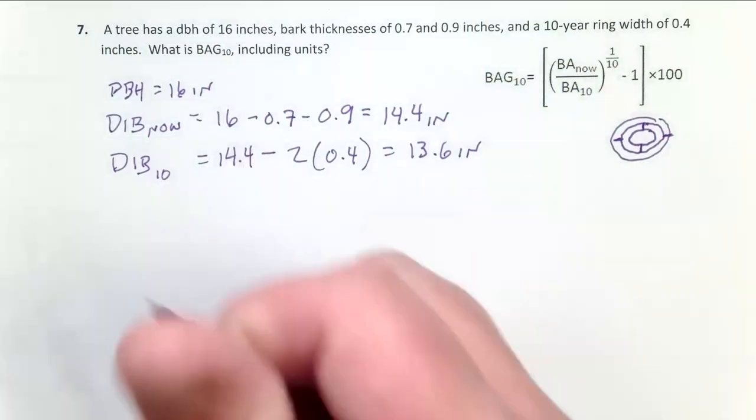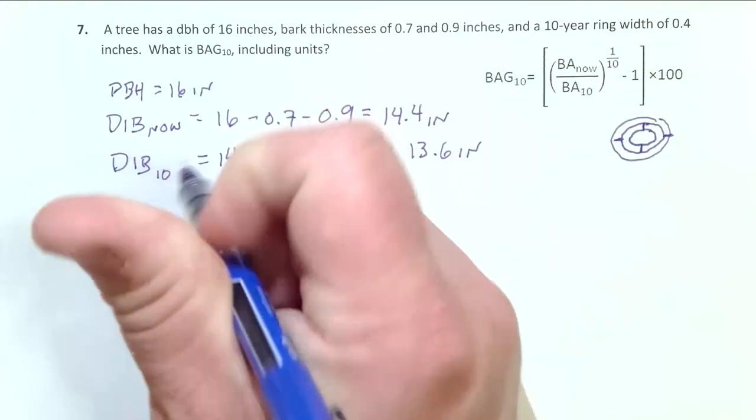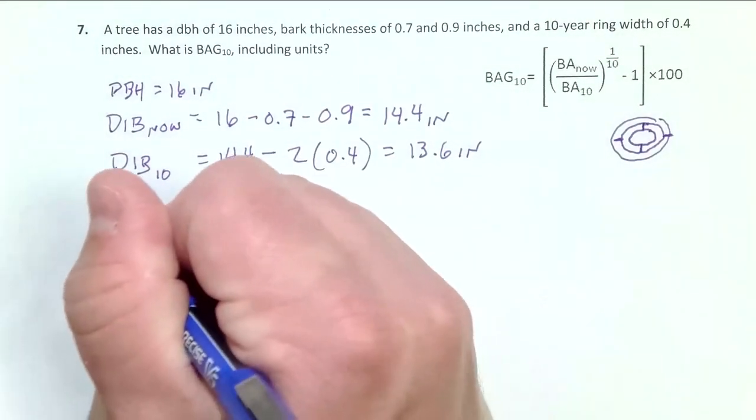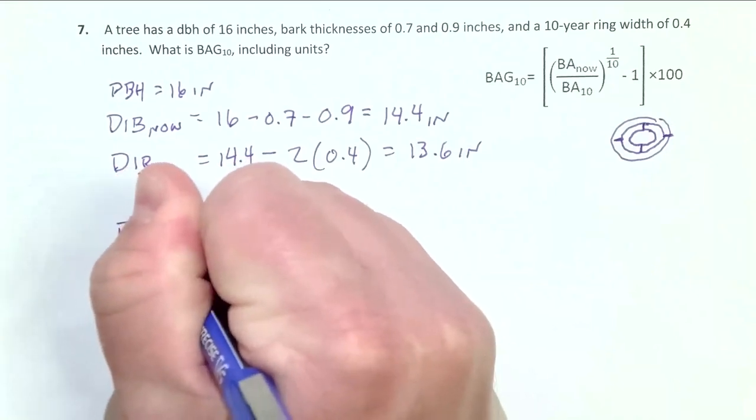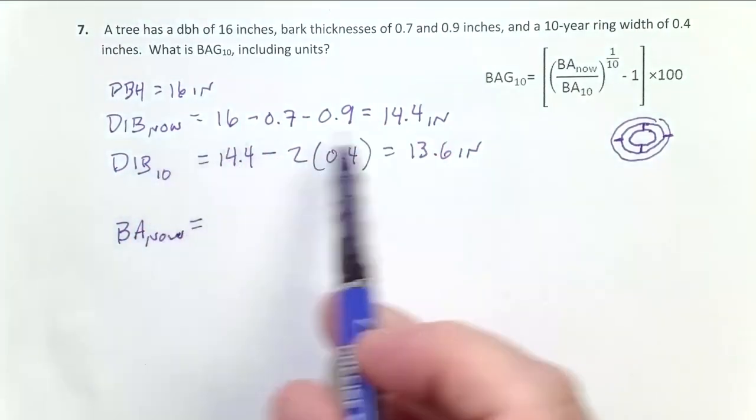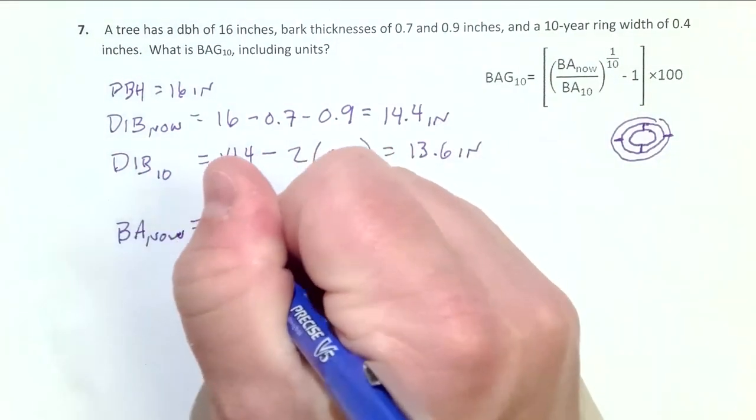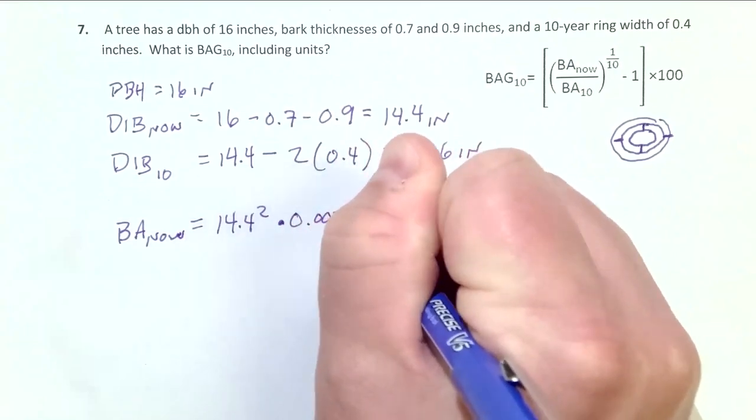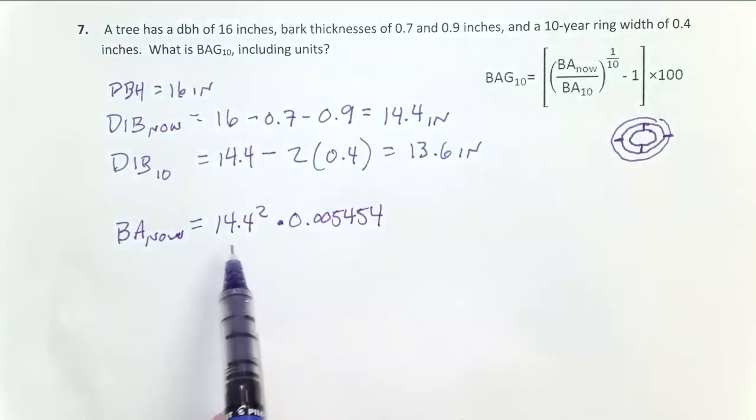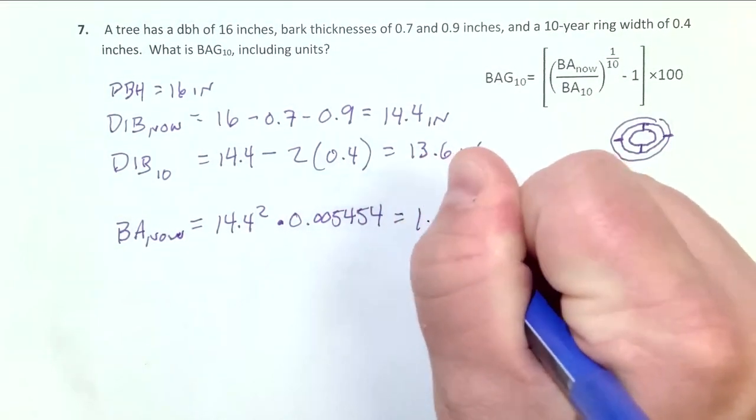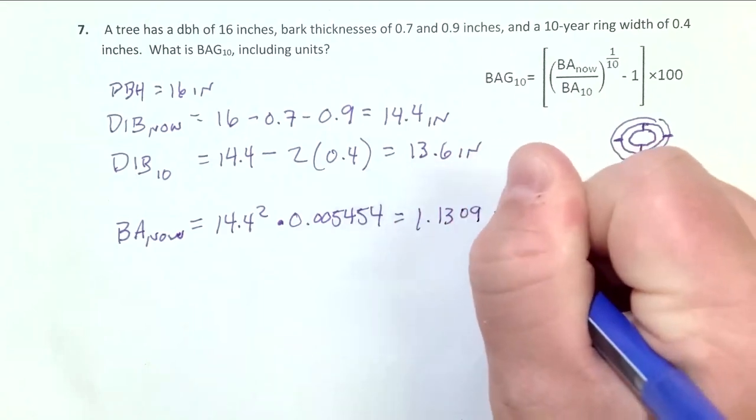And so I'll do that using our formula: diameter squared times 0.005454. So the basal area now is going to equal 14.4 squared times 0.005454. The order of operations is to square this number first and then multiply that number. And that's going to equal 1.1309 feet squared.